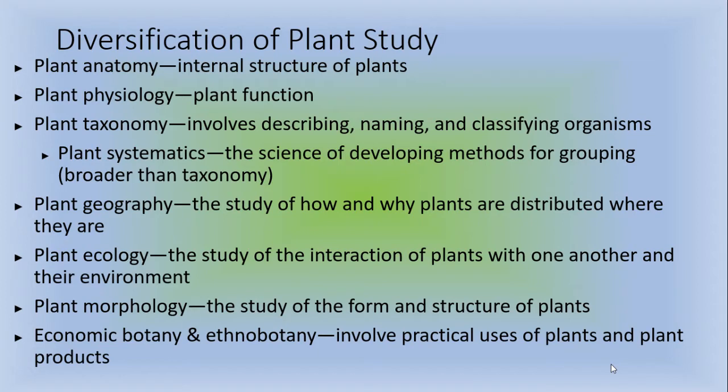The diversification of plant study. We'll talk about plant anatomy which is the internal structure of plants, plant physiology which is the function of the plant, plant taxonomy which involves describing, naming, and classifying organisms, and plant systematics which is the science of developing the method for grouping these plants so it's broader than taxonomy. Plant geography, the study of how and why plants are distributed where they are. Plant ecology, the study of the interaction of plants with one another and their environment. Plant morphology, the study of the form and structure of plants. And economic botany and ethnobotany which involves practical uses of plants and plant products.